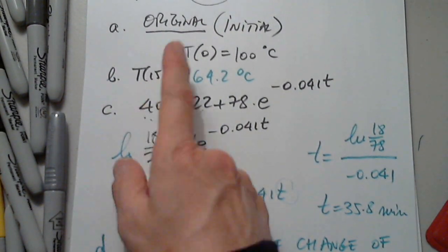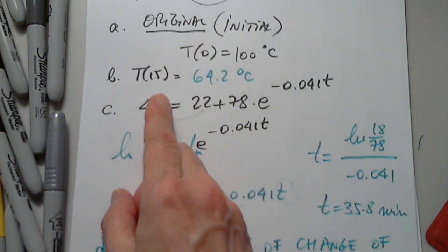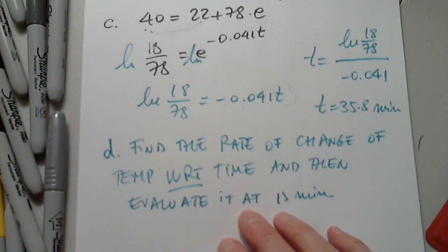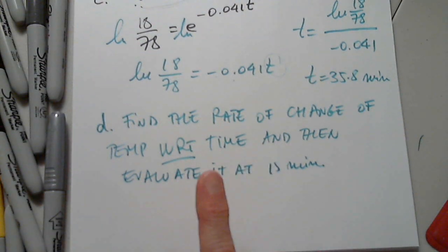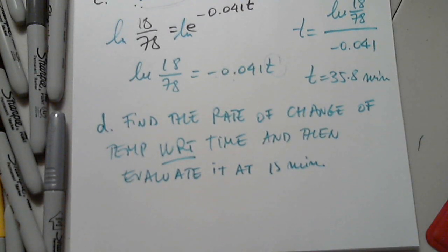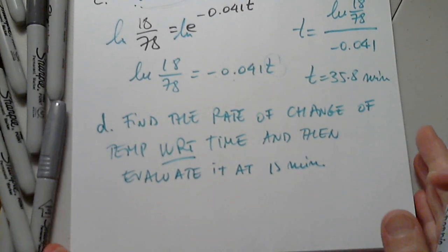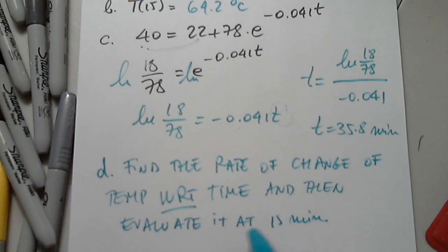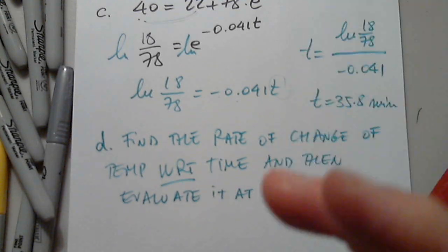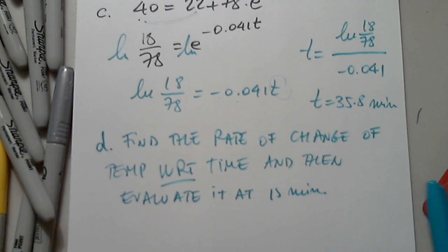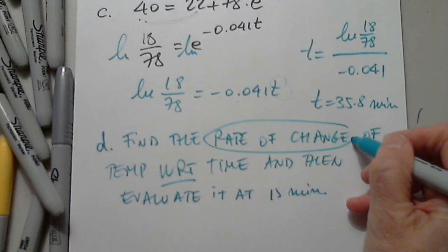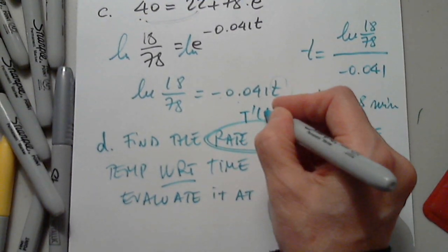All of Part B was algebra, but this new question is calculus. We found the temperature after 15 minutes is 64.2. Now we're asked to find the rate of change of temperature with respect to time and evaluate at 15 minutes. That means finding T prime of T.